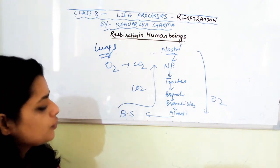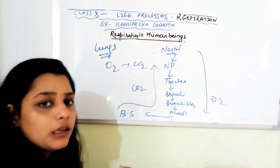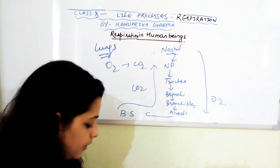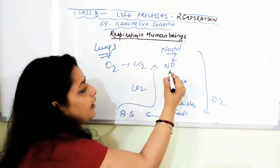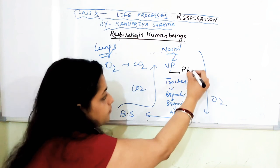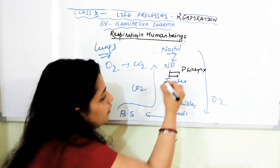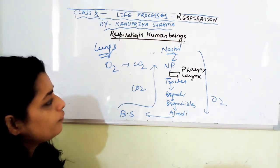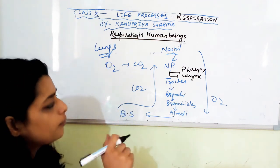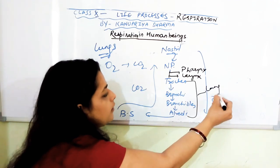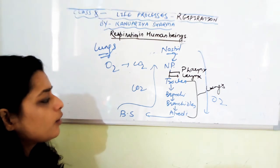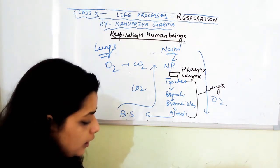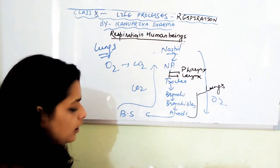The nostrils are the openings of the nose. I've missed two components here — they are pharynx and larynx. The larynx is also known as the voice box, or the starting of the windpipe. The pharynx is the food pipe and the larynx is the windpipe, then into the trachea, then bronchi. Trachea is outside the lung — from the bronchi the lungs begin.